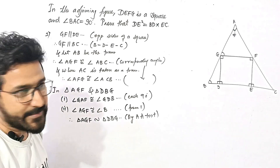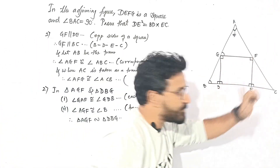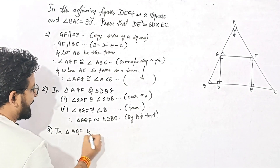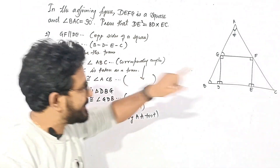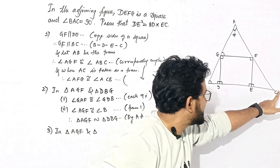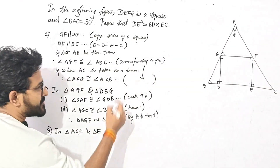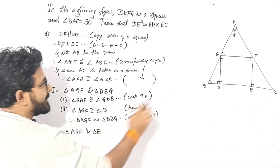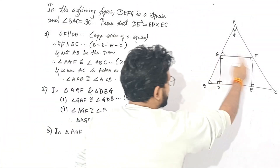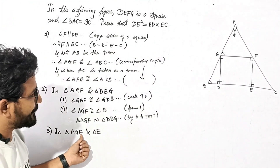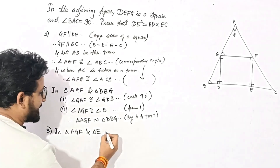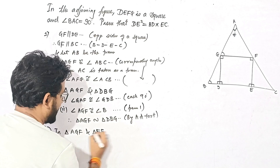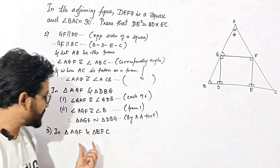So the first pair of triangles is proven similar. In the same way we will also prove the second pair. In triangle AGF and triangle ECF: A corresponds to E (both 90 degrees), and F corresponds to C (corresponding angles). So the second triangle's name is ECF. Correspondence: A to E, F to C, and G to the remaining vertex.